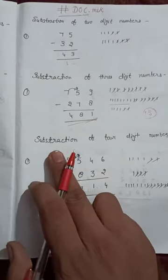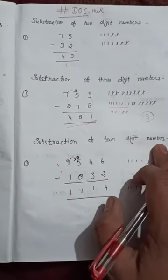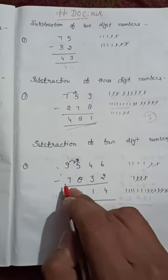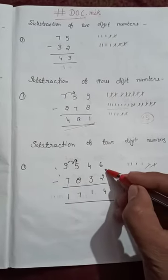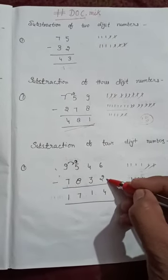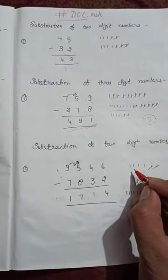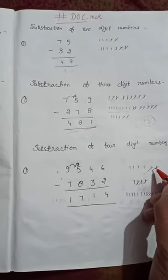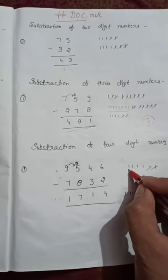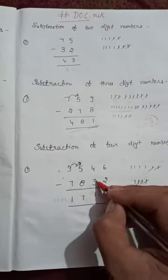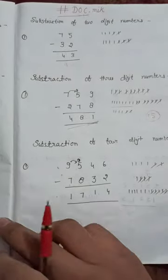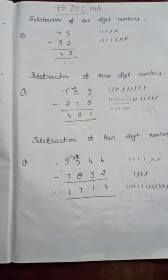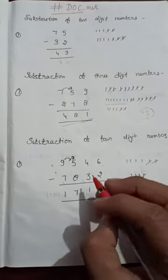Now the third and last part — subtraction of four digit numbers: 9546 minus 7832. First, 6 minus 2 is very simple — 4. Count: 1, 2, 3, 4, 5, 6, cut two parts: 1, 2, 3, 4. Next, 4 minus 3. You all know very well when we subtract 3 from 4, we get 1.